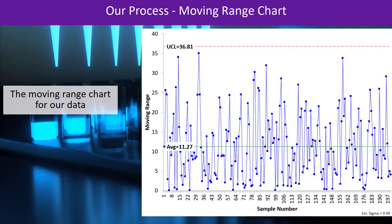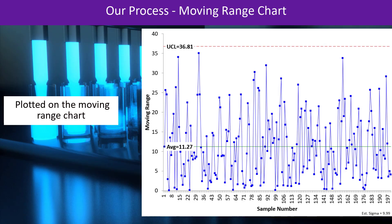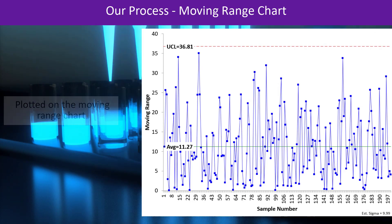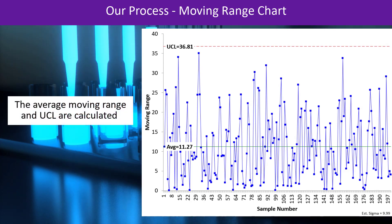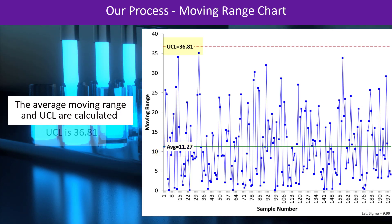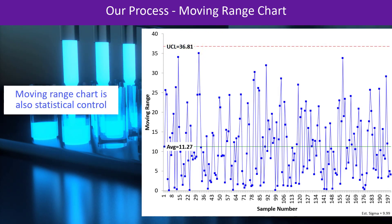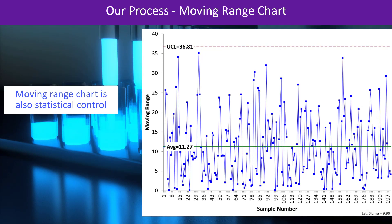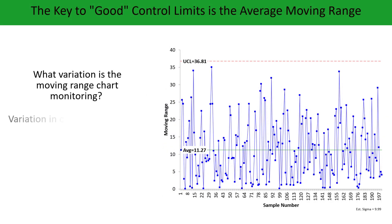Now let's take a look at our moving range chart. What we're doing with this chart is calculating the range between consecutive samples and plotting those on the moving range chart. There are 199 values because there's one less value when using the range between consecutive points. We then calculate the average moving range, which is very important, and the upper control limit. The average moving range is 11.27 and the upper control limit is 36.81. The moving range chart is in control as well — no points beyond the limits or any pattern.